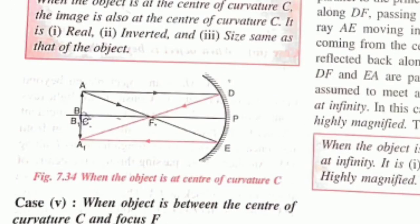The fourth case is when the object is at the center of curvature. The image will also form at the center of curvature. Where the rays of light intersect, that becomes the image. The image will be real, inverted, and the same size as the object.